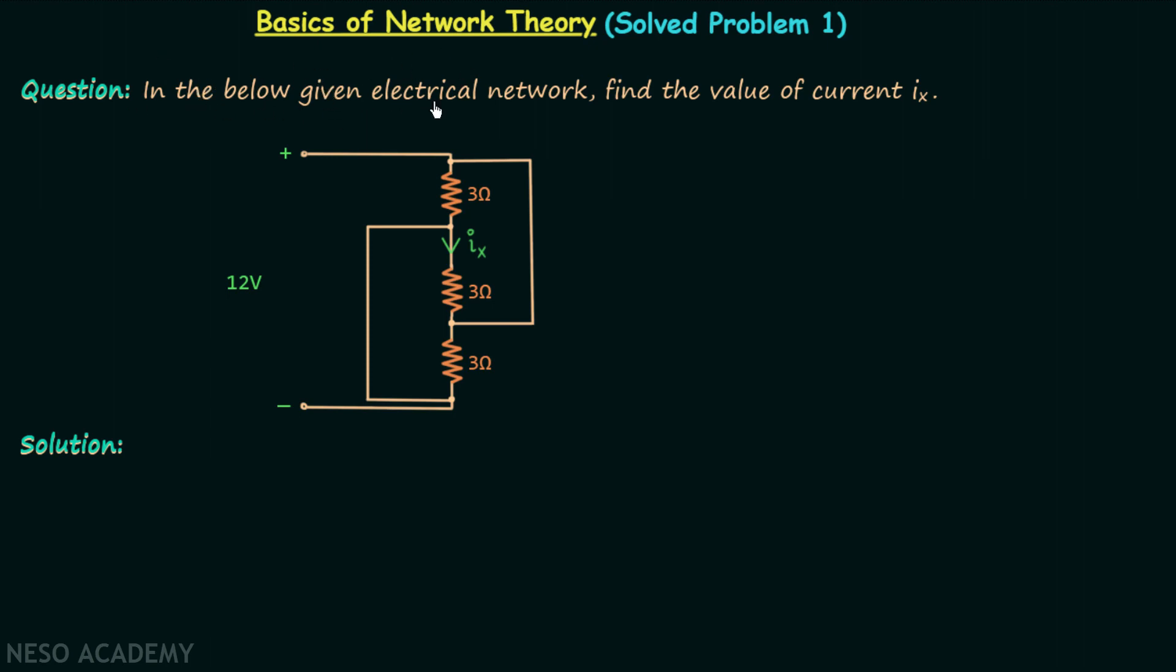In the below given electrical network, find the value of current Ix. When you look at the given network, you will find current Ix is the current through this 3 ohm resistor. In this network, across these two terminals the voltage is 12 volts, and to calculate current Ix we will